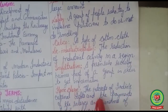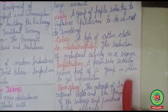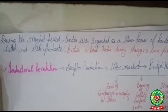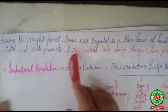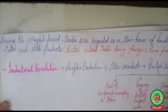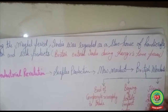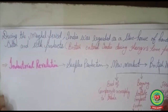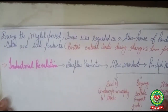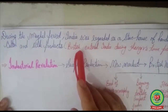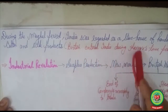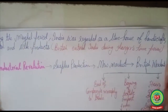Home charge refers to the interest on India's external debt and the payments of salaries and pensions of British officials. During the Mughal period, India was regarded as a storehouse of handicrafts, cotton, and silk products. That was the time when the British entered India during Jahangir's period.